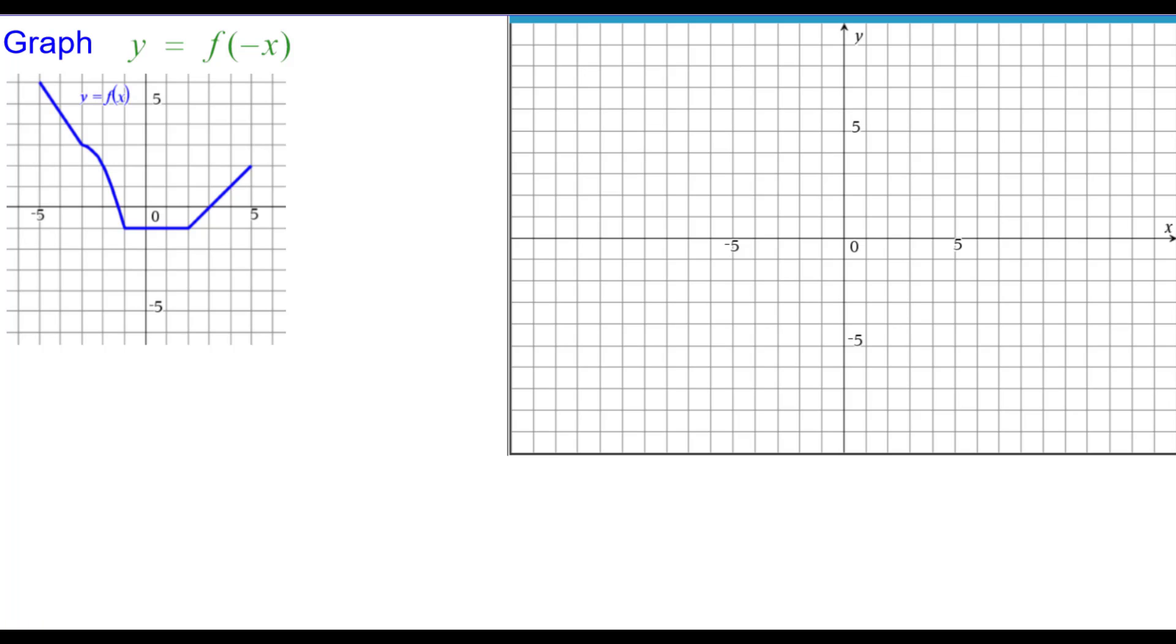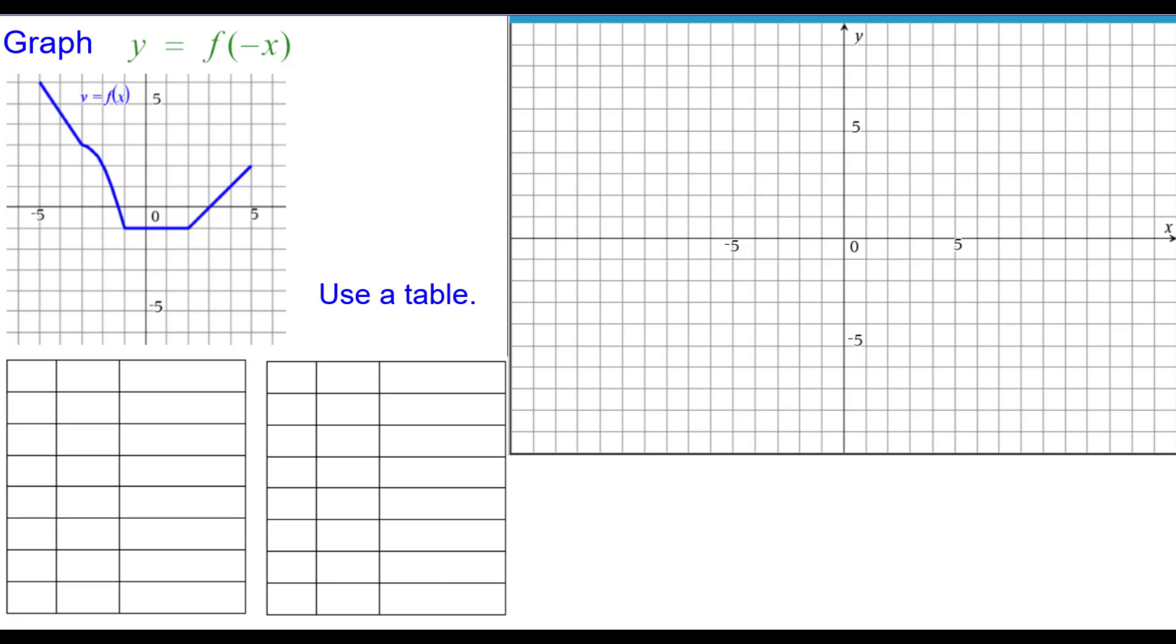To graph y equals f of the opposite of x, we're going to use a table. We're going to use a three column table and we're going to place the x values from the blue function into the three column table provided.